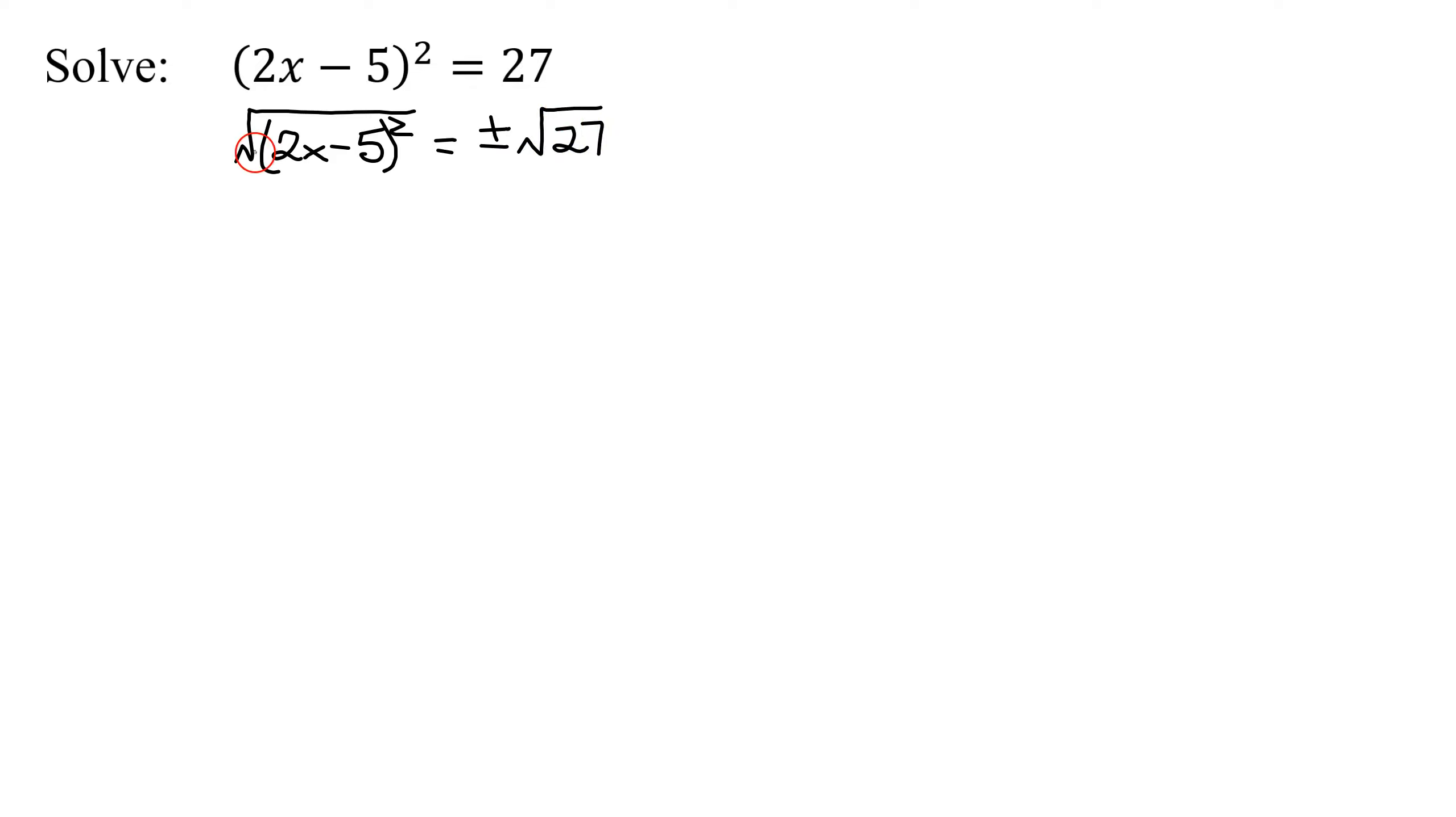What do I get when I take the square root of (2x - 5)²? These two operations undo each other, so I get 2x - 5 = ±√27.